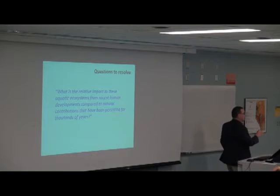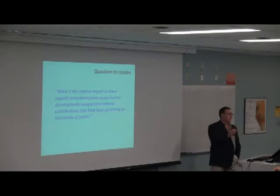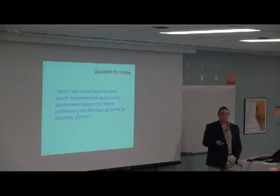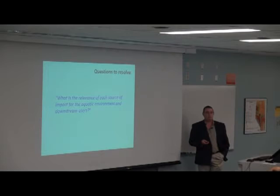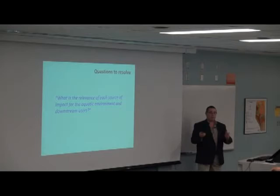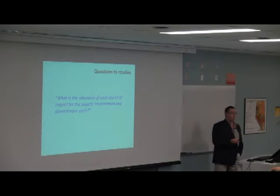This particular study is predicated on answering a couple of questions: What is the relative impact to the ecosystem from recent human developments — let's say over the last 50 to 100 years — compared to natural contributions that have been persisting for thousands of years? And what is the relevance of each? Is it 99 percent natural and 1 percent human? Is it 50-50? Until we actually have those numbers, we're really not getting to a very good point in the discussion, because we're assuming. As scientists and engineers, we don't assume — we have to get facts and make decisions based on those facts.